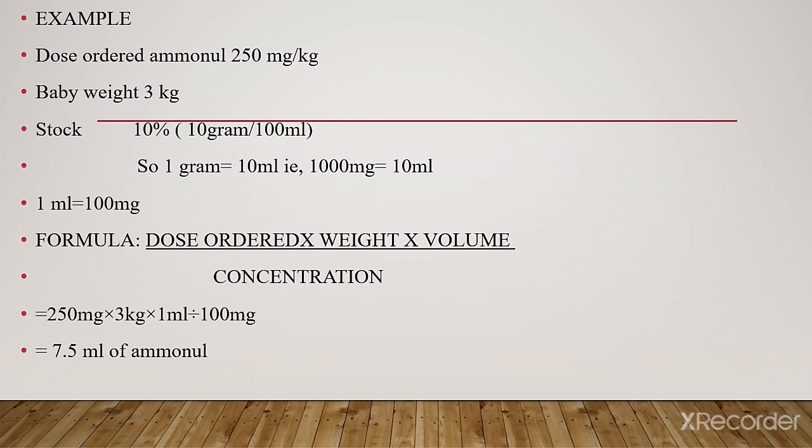Formula: dose ordered times weight times volume divided by the concentration. Dose ordered is 250 mg per kg, so: 250 mg × 3 kg × 1 ml ÷ 100 mg. You will get 7.5 ml of aminol.